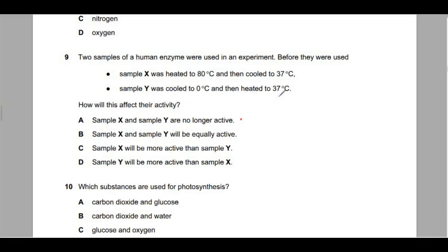I really encourage my students to read the question about three times. First one just to guess what they are talking about, just a rough understanding. So the second one, I'm going to read to understand. Two samples of a human enzyme were used in an experiment. Before they were used, sample X was heated to 80 degrees Celsius and then cooled back to 37.